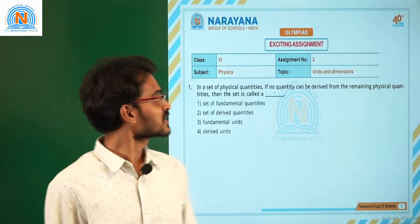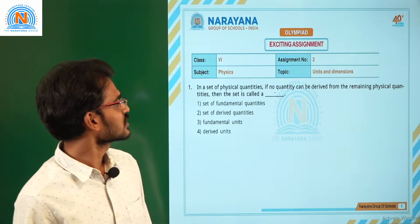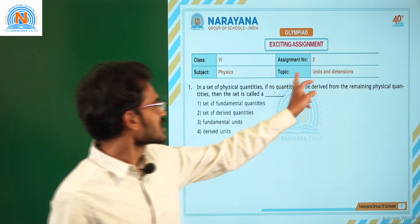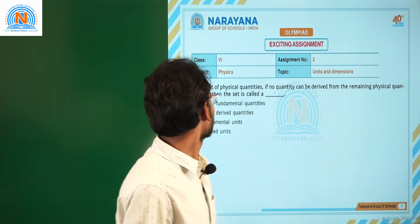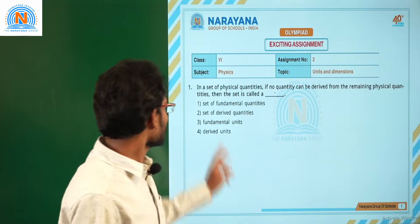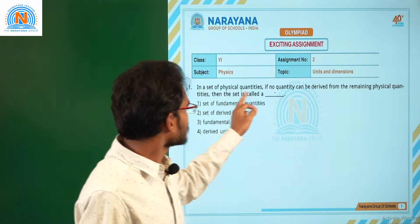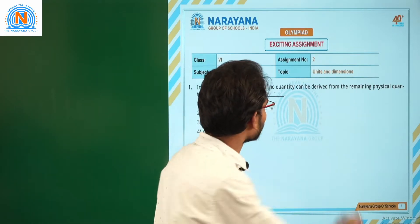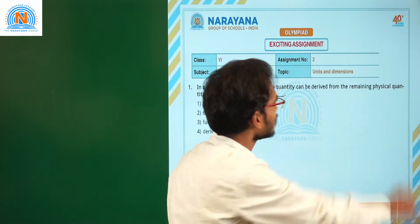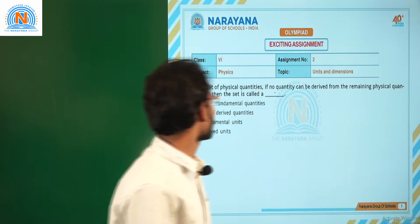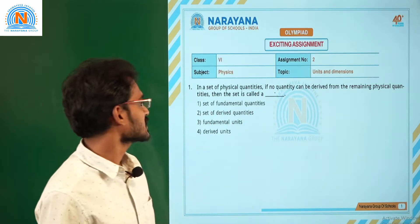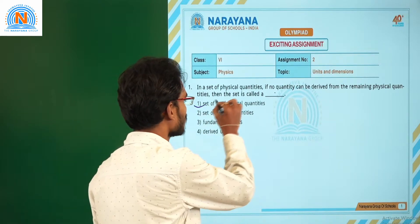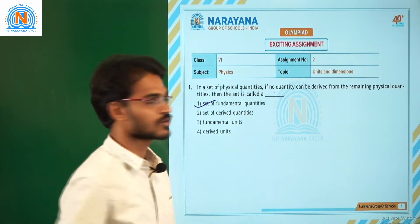Dear students, today we are discussing units and dimensions related to assignment number 2. Let us see the first question. In a set of physical quantities, if no quantity can be derived from the remaining physical quantities, then the set is called a set of fundamental physical quantities.